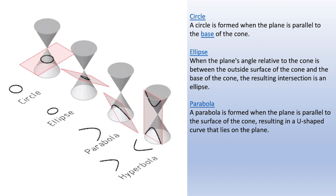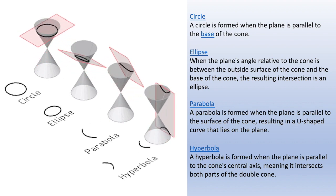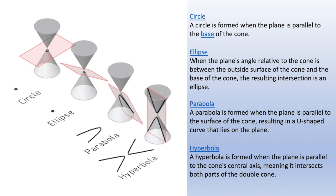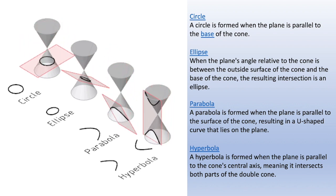And the last one is a hyperbola. A hyperbola is formed when the plane is parallel to the cone's central axis, meaning it intersects both parts of the double cone.